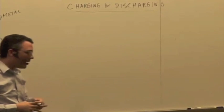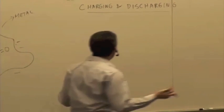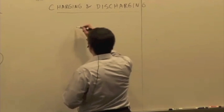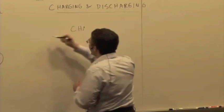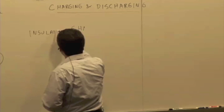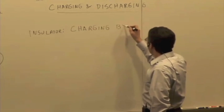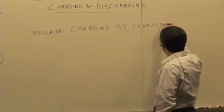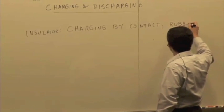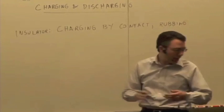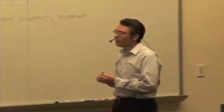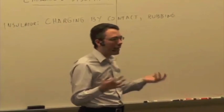We talked a little bit about charging an insulator last time. We talked about an insulator charging by contact or rubbing, where you have surface interactions going on. I showed the example of taking the plastic pipe and rubbing it with some material. We said that there's charge exchange going on, or there's some transfer of electrons.